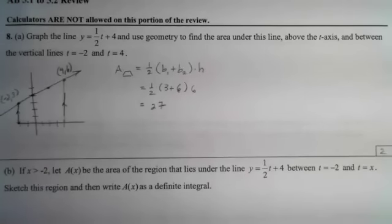Part b says if x is greater than negative 2, let A(x) be the area of the region that lies under this line between negative 2 and x. So sketch the region and then write A(x) as a definite integral.